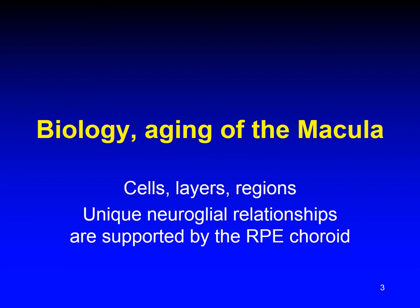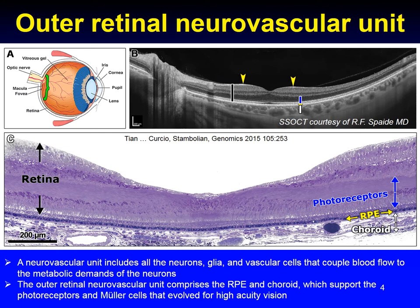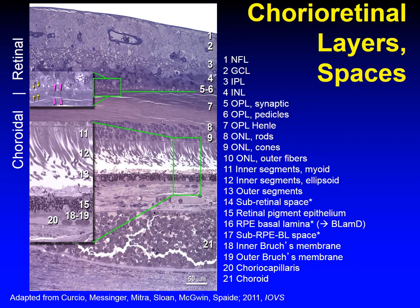We begin with biology and aging of the macula, focusing on the cells, layers, and regions, and the unique neuroglial relationships that are supported by the RPE choroid. A neurovascular unit includes all the neurons, glia, and vascular cells that couple blood flow to the metabolic demands of the neurons. The outer retinal neurovascular unit comprises the RPE and choroid, which together support the photoreceptors and neural cells that evolved for high acuity vision.